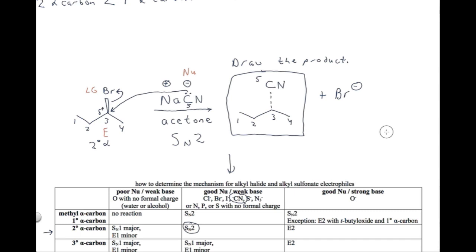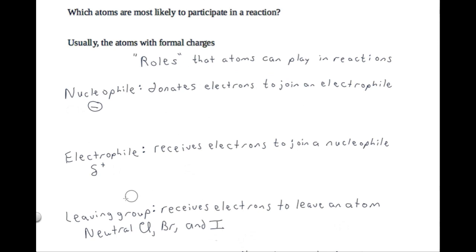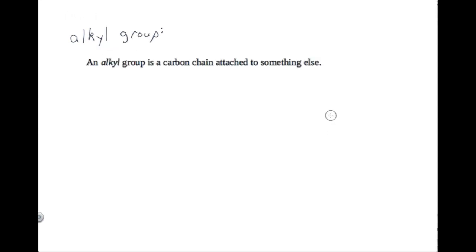That's what we have to learn about next. The only good leaving groups we've learned about so far are neutral chlorine, bromine, and iodide. Let's see if we can add another type of leaving group to this list. To begin with, it will be helpful to define the term alkyl group. We can define an alkyl group as a carbon chain attached to something else.